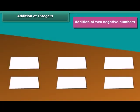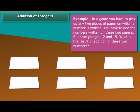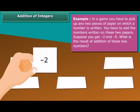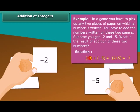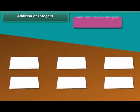Addition of two negative numbers. Example: In a game, you have to pick up any two pieces of paper on which a number is written. You have to add the numbers written on these two papers. Suppose you get minus 2 and minus 5. What is the result of addition of these two numbers? Minus 2 plus minus 5 is equal to minus 2 plus 5, which equals minus 7.